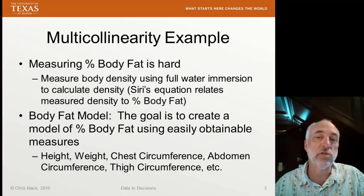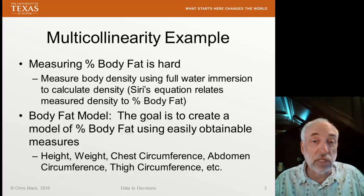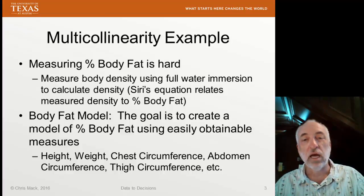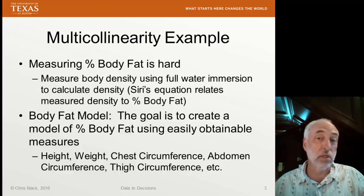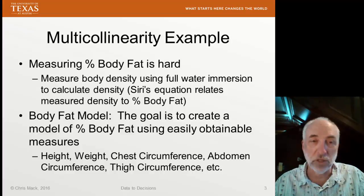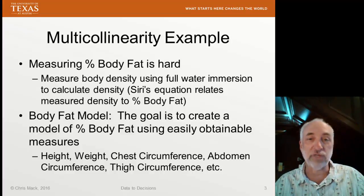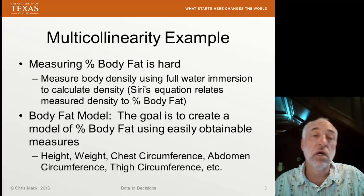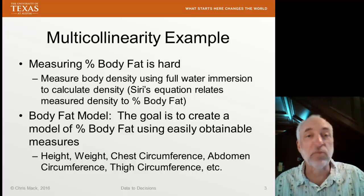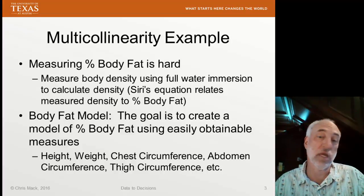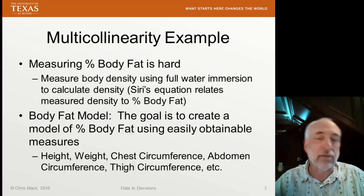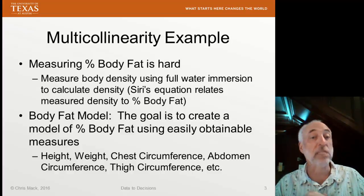Then we have some relationship equation that relates the measured density to percent body fat, because muscle and fat have very different densities. But this requires equipment that's not typically available in the home or in the doctor's office. So what we're looking for is a simple way of predicting body fat using easily obtainable measures like height, weight, circumference around your chest, your abdomen, thighs, ankles, knees — all kinds of measurements were taken in this experiment.